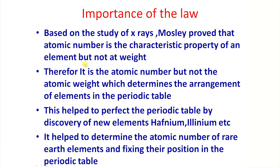This helped to perfect the periodic table by the discovery of new elements such as hafnium and helium, etc. It also helped to determine the atomic number of rare earth elements and fix their positions in the periodic table. Thus, the discovery of characteristic x-rays helped perfect the periodic table and led to the discovery of different elements such as hafnium and others.